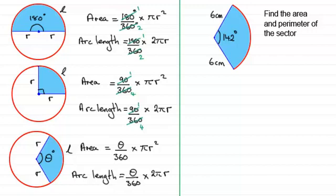Okay, welcome back then. Let's just see how you got on. Well, the area is going to be a fraction of the area of a complete circle. That fraction then is 142/360ths times the area of the circle, πr². The radius being 6, so that's π times 6 squared.